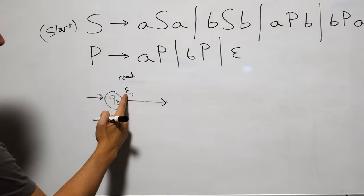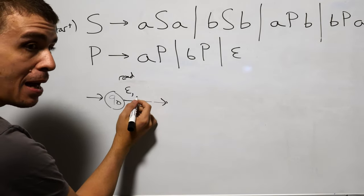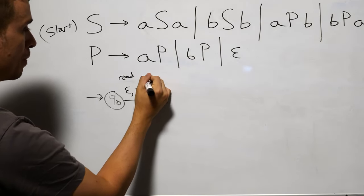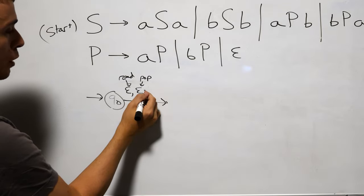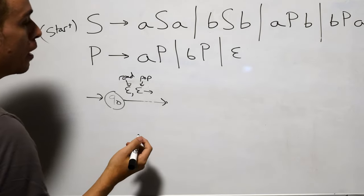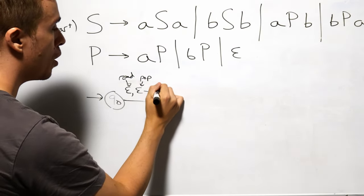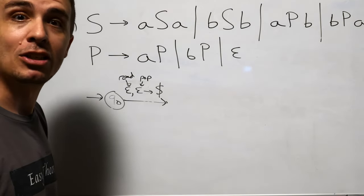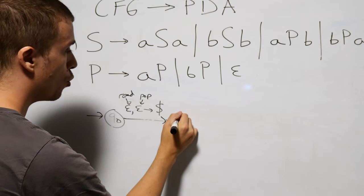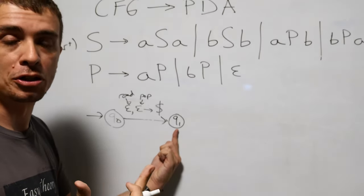I'm going to have a state Q0. On the first transition, I'm going to read nothing, pop nothing — the stack is empty so that would be pointless — and then push a dollar sign. The format is: read, then pop, then push. So this is read nothing, pop nothing, push dollar sign. I'm going to a state Q1. At this point, the only thing on the stack is the dollar sign.